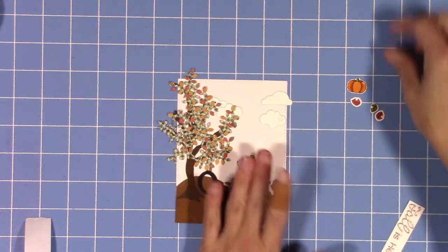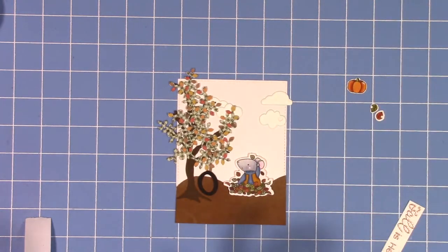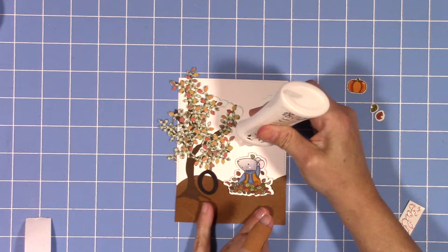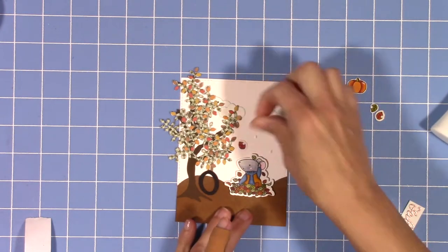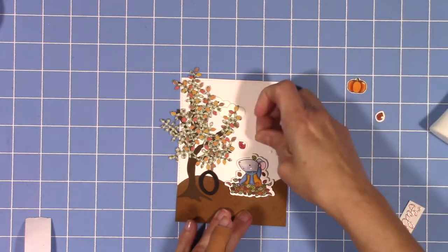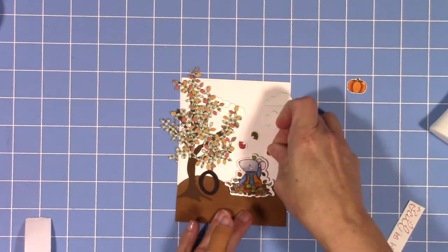Now I'm just going to pop up my little mouse and place all the little extras. I thought the little leaves would be cute if they were just kind of flying up from around him since his little arm is up in the air. I'm just going to put those down flat with some glue.